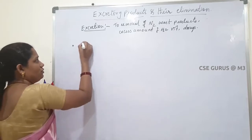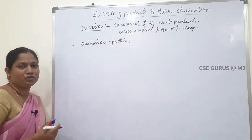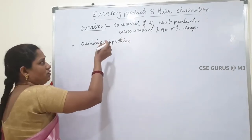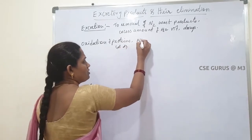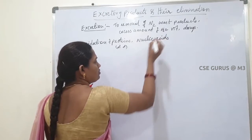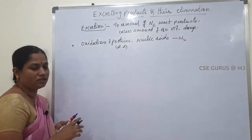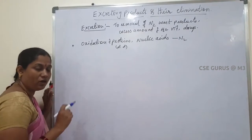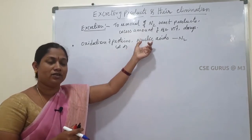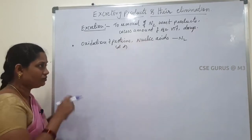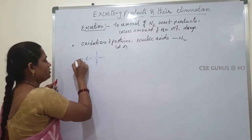Now, where are these nitrogenous waste products formed in our body? They are formed during the oxidation of proteins, amino acids, and nucleic acids — that is, during the energy production process or protein metabolism. During this process, ammonia or nitrogenous waste products are released into the body.